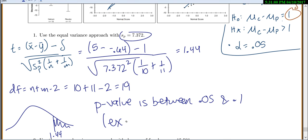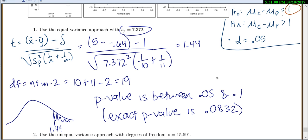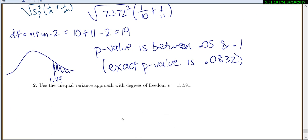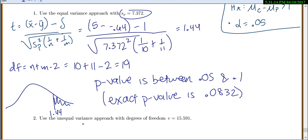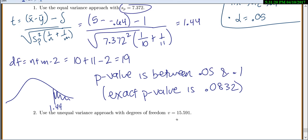If I use a calculator, my exact p-value is 0.0832. Now that we've tried that one, let's try it now with unequal variance approach. And I was nice and calculated the degrees of freedom because that's also very difficult to calculate and takes a while.